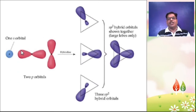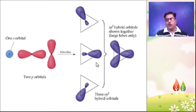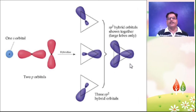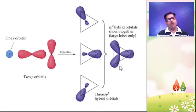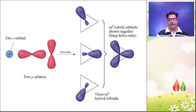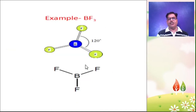Here, one S and two P orbitals can be combined to give three SP2 hybrid orbitals. These hybrid orbitals are co-planar, making an angle of 120 degrees with one another. The SP2 hybrid orbitals are shown together with large lobes. This trigonal planar structure of BF3 is obtained. Because of SP2 hybrid orbitals of boron, BF3 is trigonal planar with an FBF bond angle of 120 degrees and all BF bonds are equal.